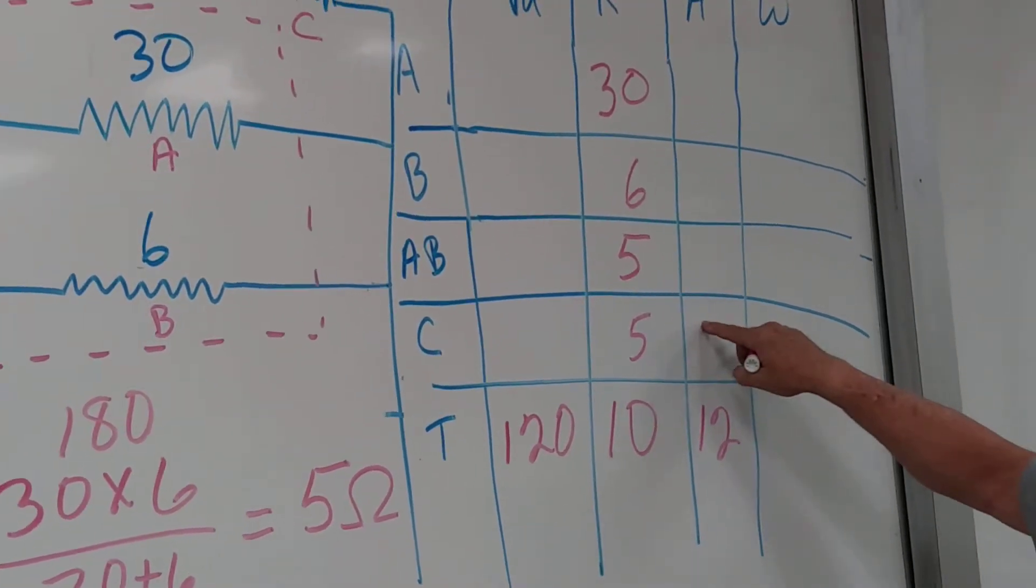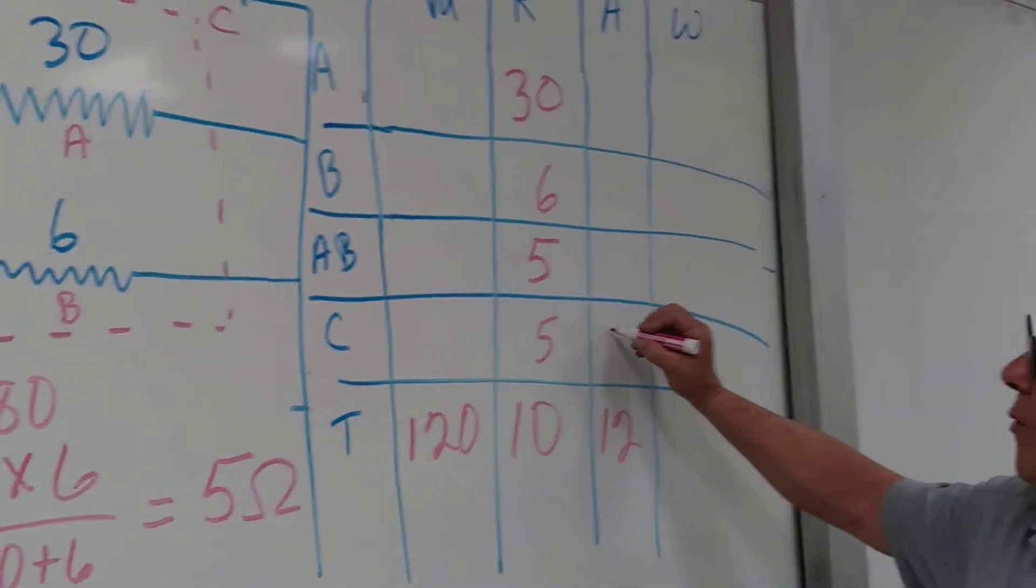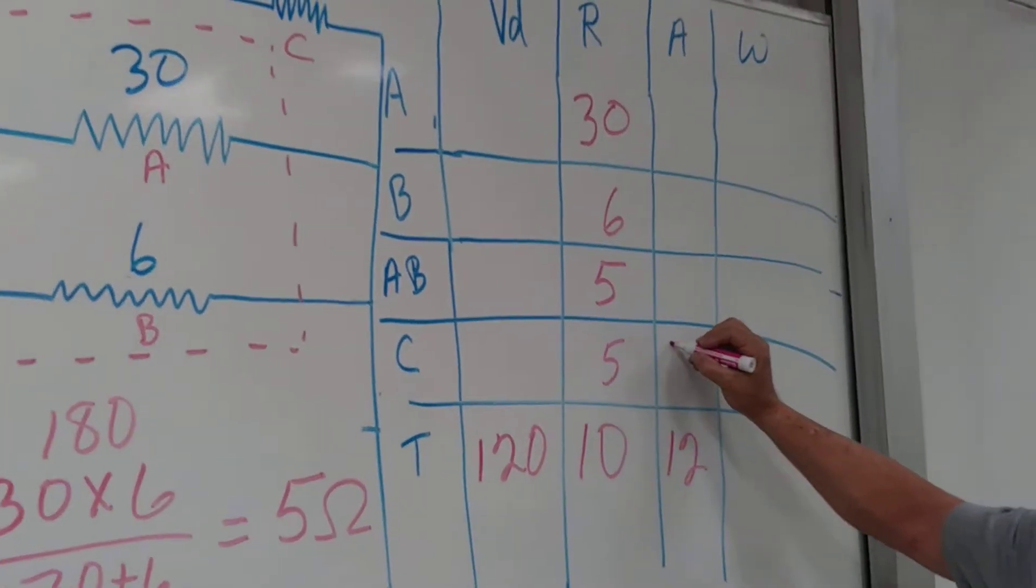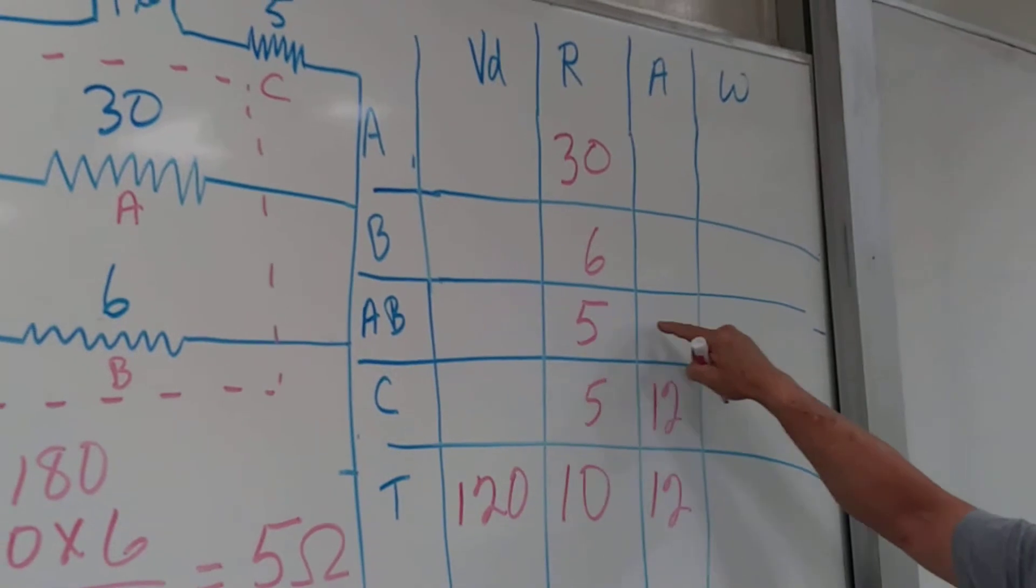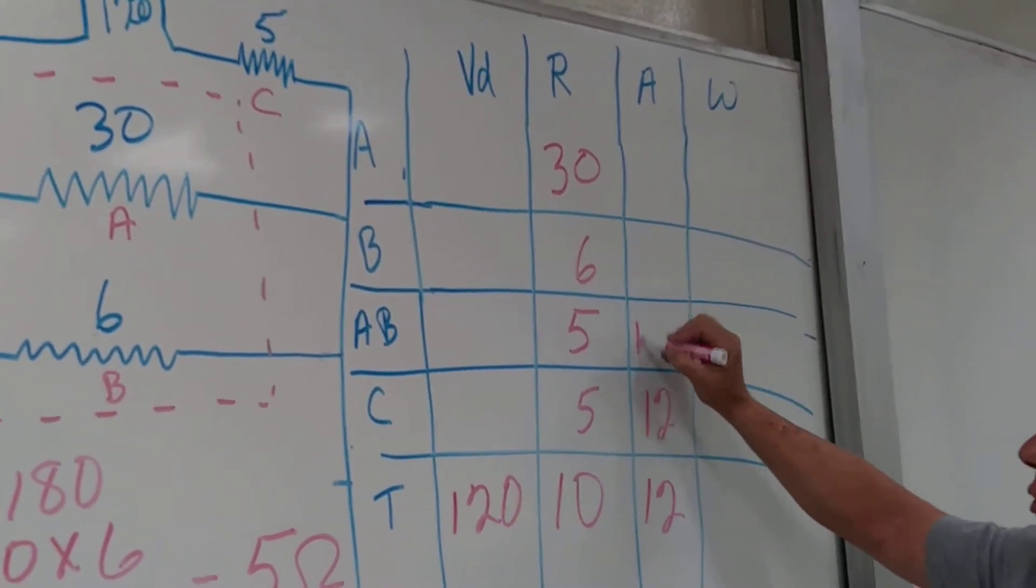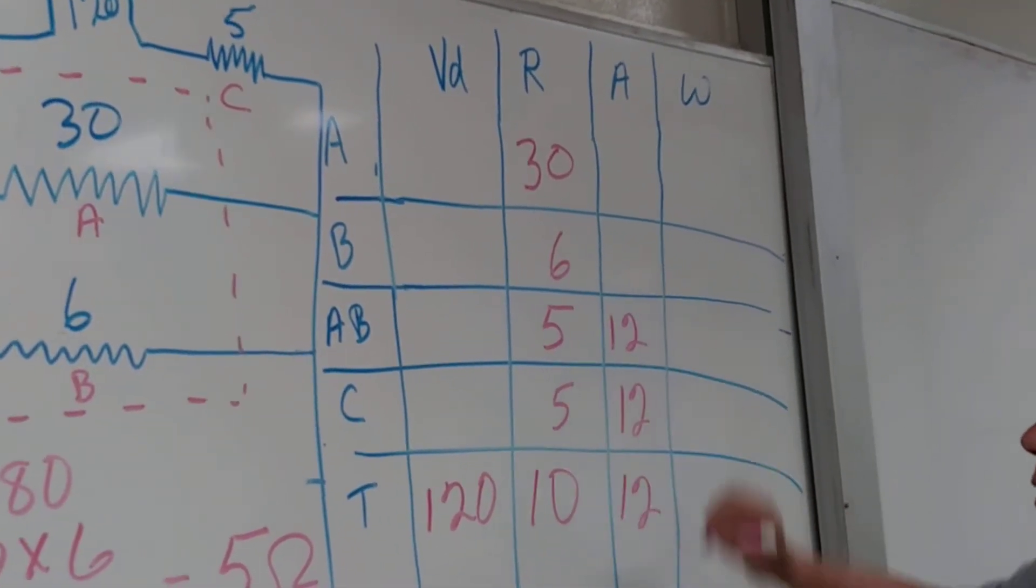Now that means C is going to get 12, and A and B together are going to get 12. Correct?